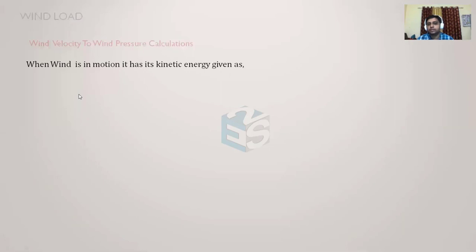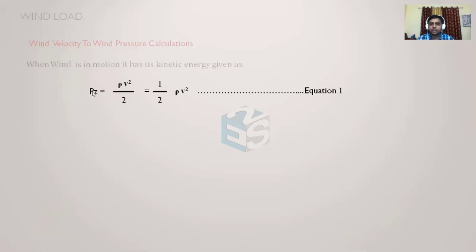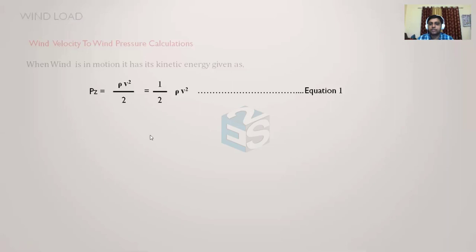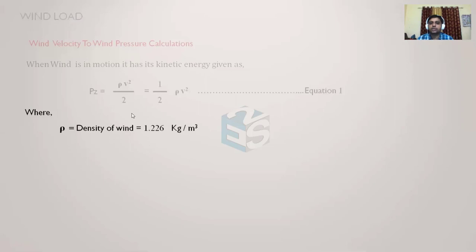This is a general engineering practice for converting wind velocity into wind pressure. When wind is in motion it has kinetic energy. The wind pressure at elevation z, Pz, is calculated as: Pz = ½ρV², analogous to kinetic energy = ½mV². In the case of wind, ρ represents the density of air, so Pz = ½ρV² gives us wind pressure at elevation z.